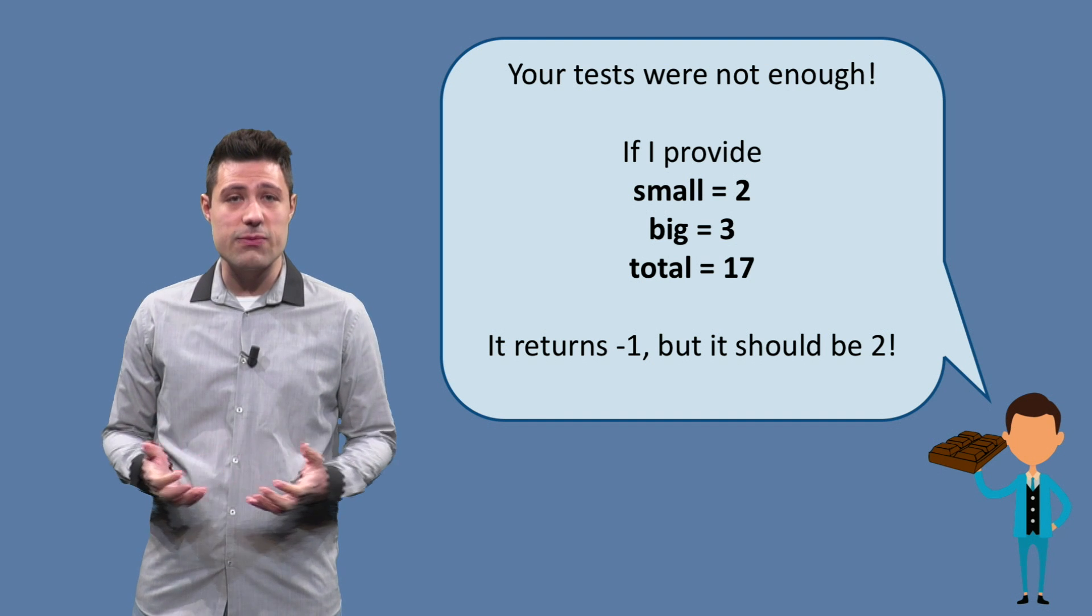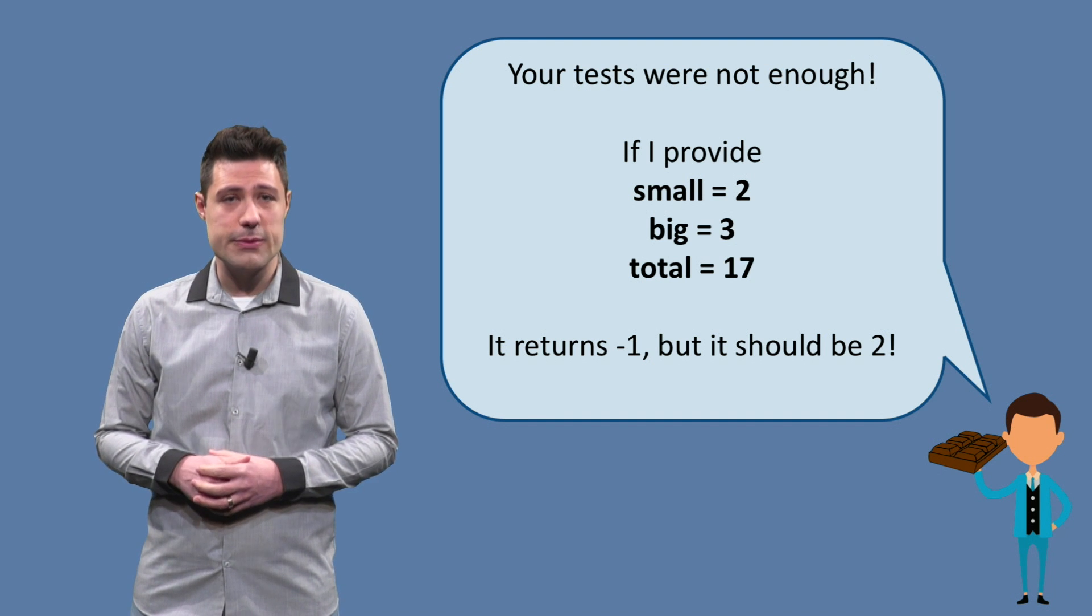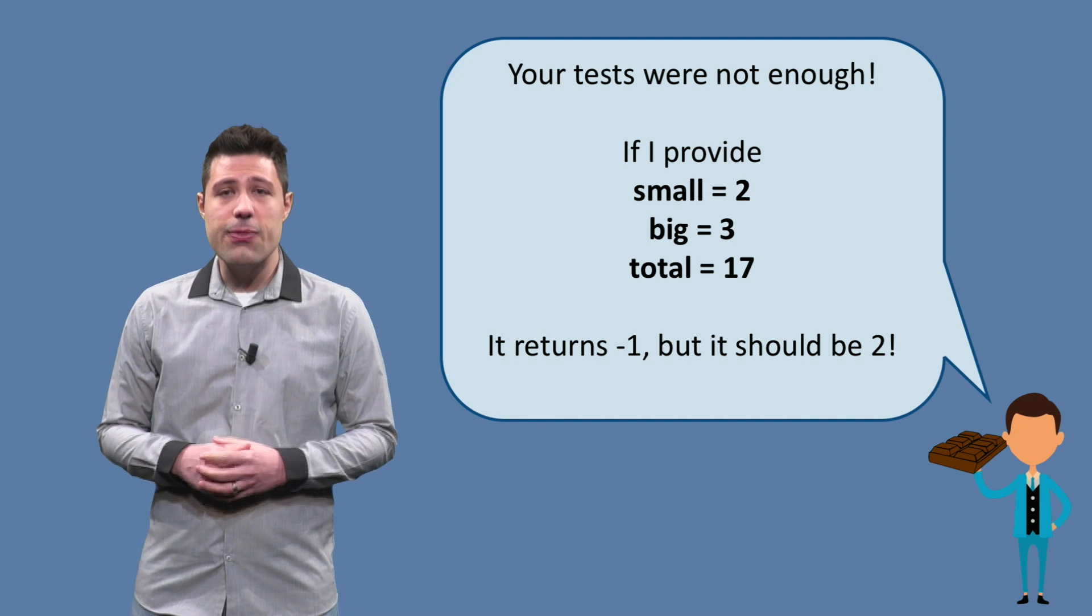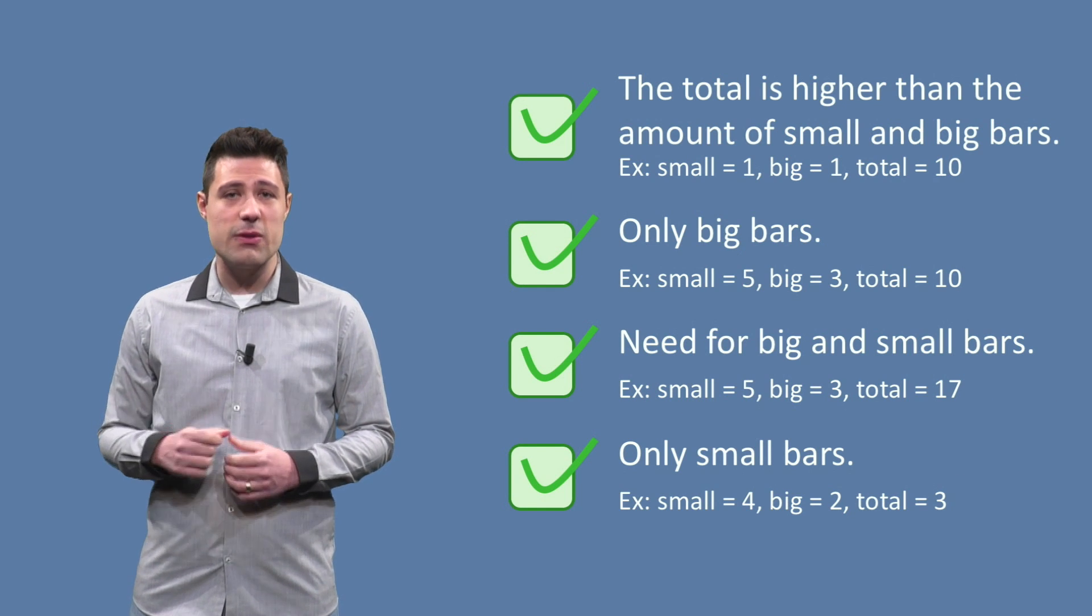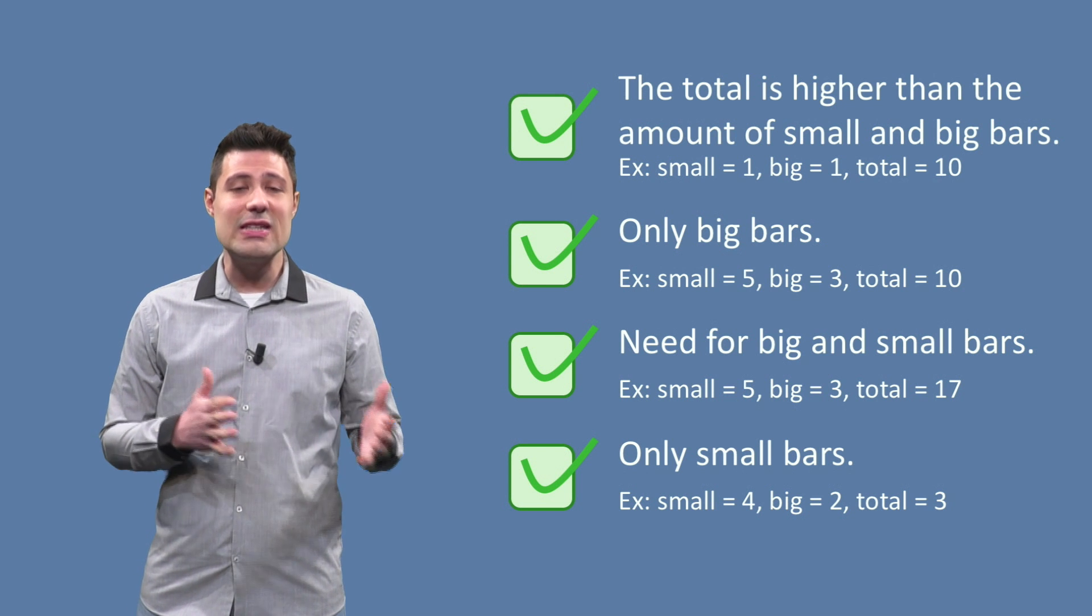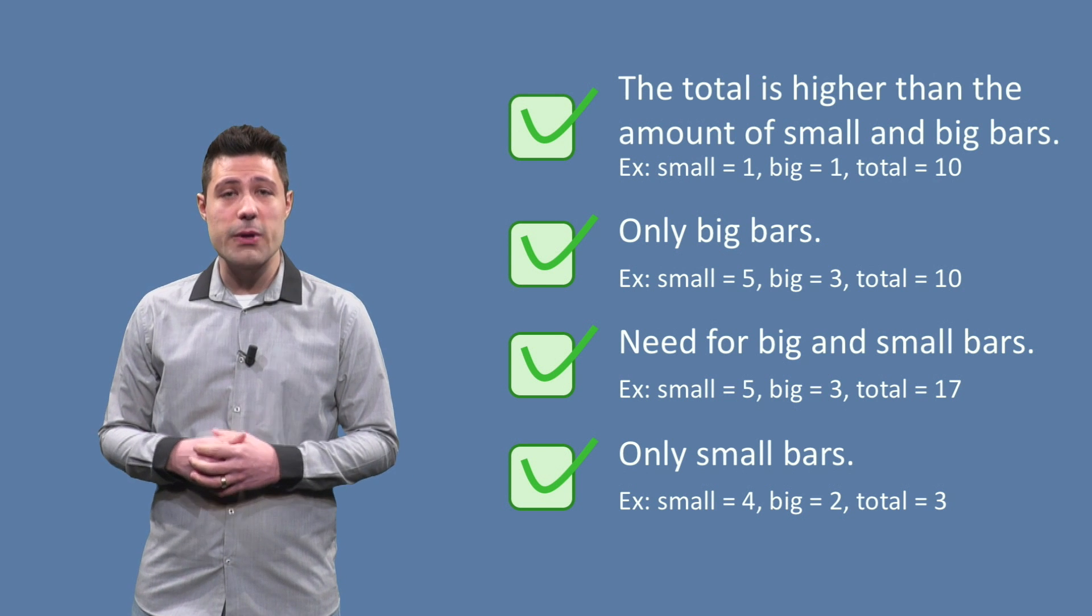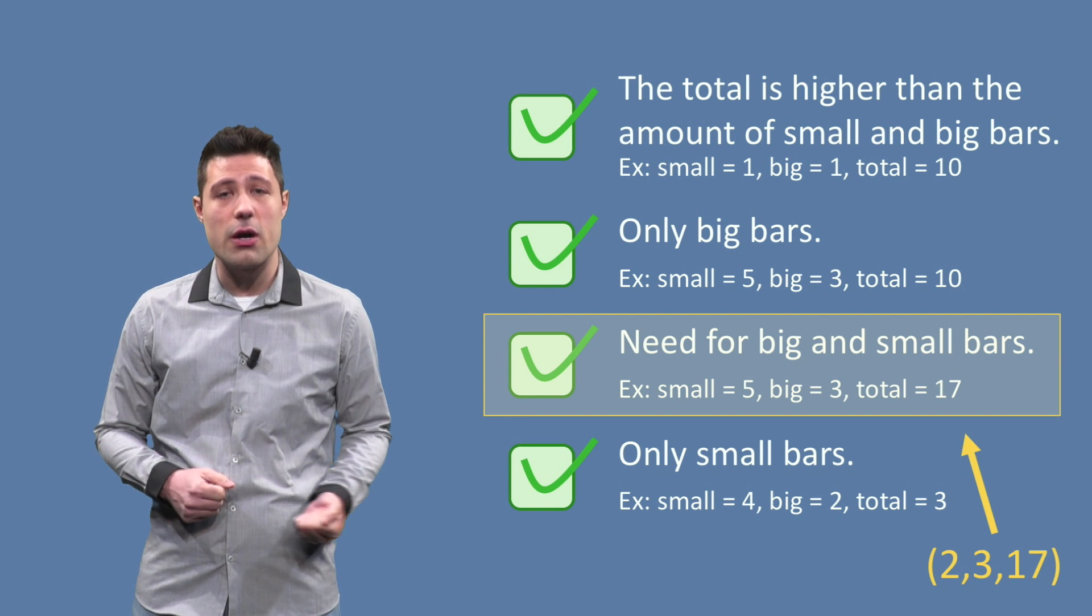So we didn't test enough, we were not able to find the problem. If we think again about the four partitions we have, we see that the input that generates the bug, 2, 3, 17, belongs to the third partition, need for big and small bars.